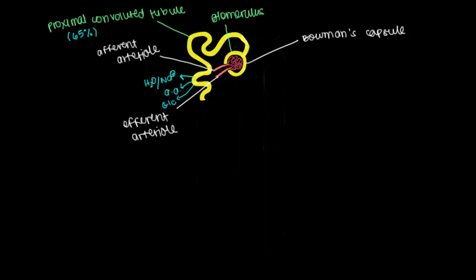Where does the nephron go next? Well, it actually becomes this loop right here. It descends deep into the kidney, and then it ascends back up again. This entire structure is affectionately called the loop of Henle.